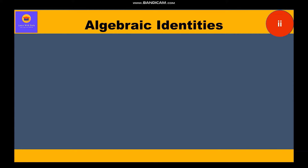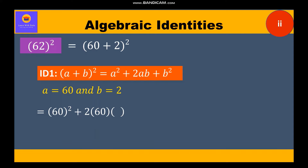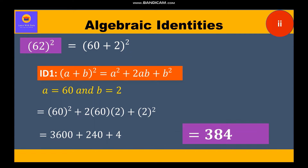Now let's move to the second part: 62 whole square, which equals (60 + 2) whole square. This is identity 1: (a + b)² = a² + 2ab + b². Here a = 60 and b = 2. Substituting the values, we get 60² + 2×60×2 + 2² = 3844. So this is our final answer.